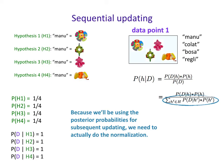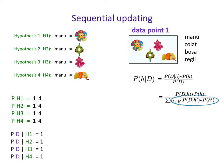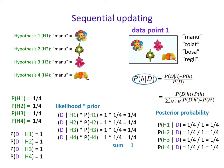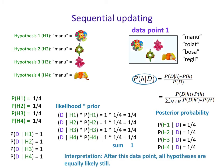Because we'll be using the posterior probabilities for sequential updating, we need to do the normalization step. We calculate likelihood times prior for each hypothesis: one times one-fourth equals one-fourth for each. Summing all of these gives a denominator of one. So the posterior for each hypothesis is one-fourth divided by one, which is one-fourth. The interpretation is that after this data point, all hypotheses are equally likely — 'Manu' could be any one of these four objects.